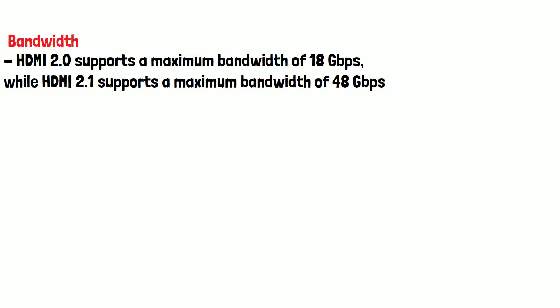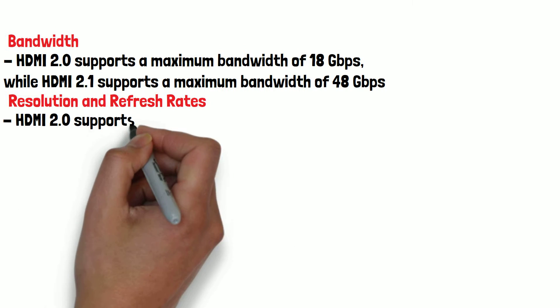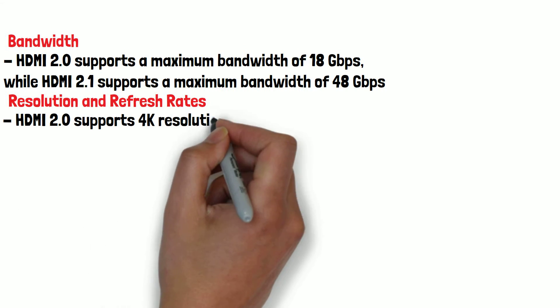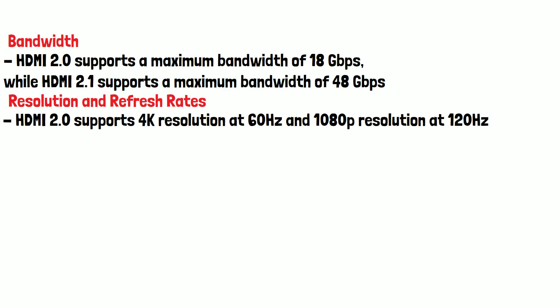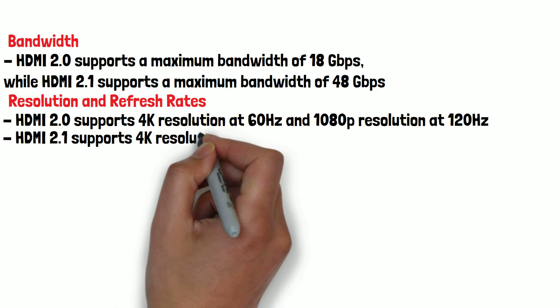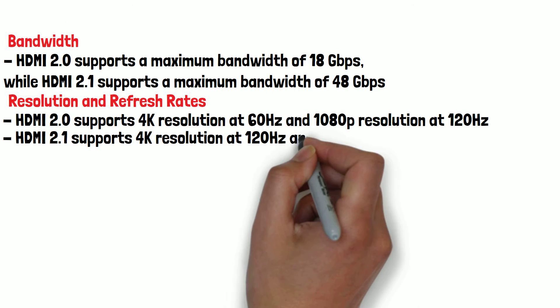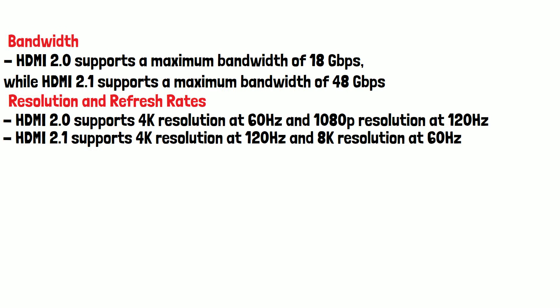Now let's look at resolution and refresh rates in more detail. HDMI 2.0 supports 4K resolution at 60Hz and 1080p resolution at 120Hz. HDMI 2.1, on the other hand, supports 4K resolution at 120Hz and 8K resolution at 60Hz. This makes HDMI 2.1 more suitable for high-end gaming and video content.